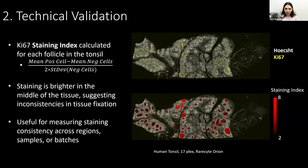Once you've looked at your images, it's important to validate them in a truly quantifiable way. Looking at them is, of course, the first step, but it's not enough to just say it looks pretty. In this case, I looked at the KI67 staining index. Staining index is a metric that comes from flow cytometry — it's the difference between the positive cells and the negative cells intensity divided by two times the standard deviation of the negative cell population.